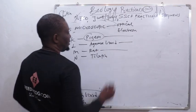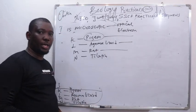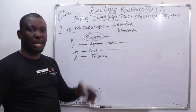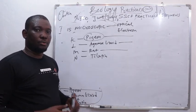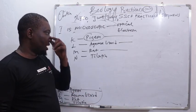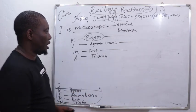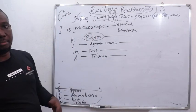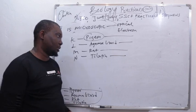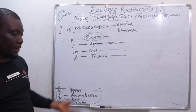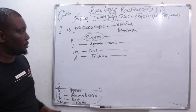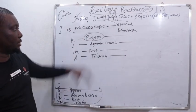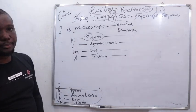Agama lizard and rats are terrestrial, found in corners, dark places, some hidden places and homes. Tilapia is aquatic, found in fresh water like rivers and lakes. This is on the habitats of the specimens.